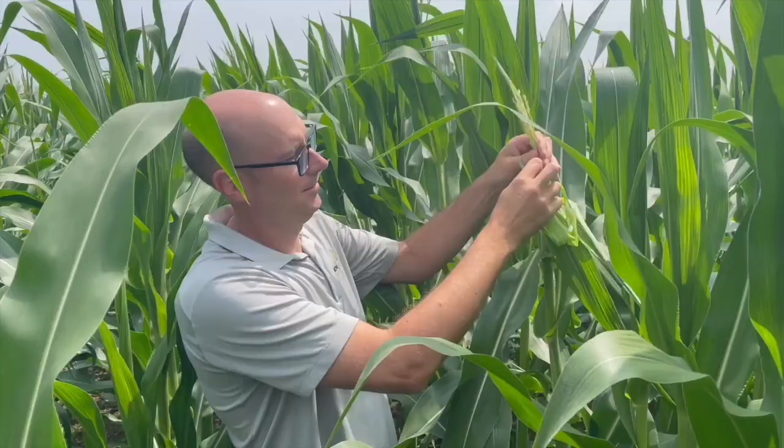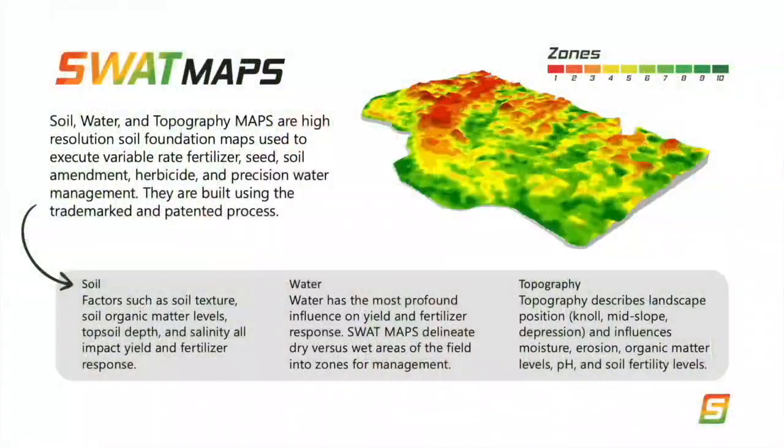Crop yield potential — you might have yield maps for that or an educated guess of how those areas could perform. One way of managing it better than at the field level is to get into the subfield level, but that means trying to identify what the crop input response is going to be in those areas. Today we're going to talk about nulls, mid slopes, and depressions. You're a big proponent of SWAT maps — soil, water, and topography — and how they marry with inputs.